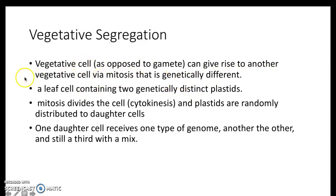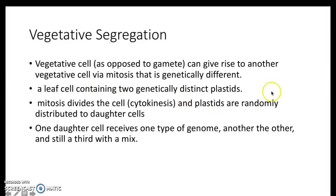A vegetative cell can give rise to another vegetative cell by mitosis, and that new cell can be genetically different. This is amazing because most people are not used to this — even if they've taken a general biology class, they've never heard of it. Mitosis is supposed to result in something completely identical, genetically identical. It's the difference between sexual and asexual reproduction. But here in plants it's possible, and actually quite frequent in higher angiosperms, less frequent in gymnosperms, though conifers can do this as well.